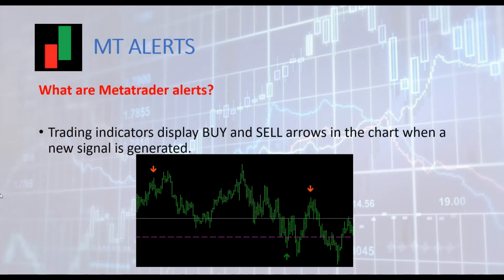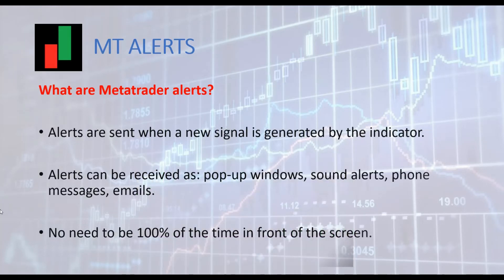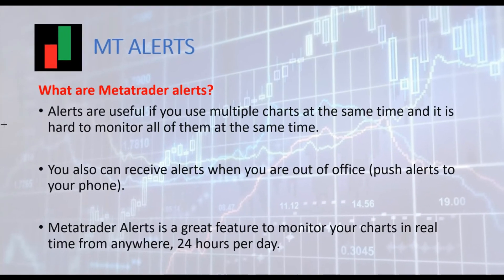Before going into more details, some definitions about the context. We suppose that we use an indicator for MetaTrader that displays arrows indicating buy and sell opportunities — we can call them buy and sell signals. Alerts notify the user that a new signal was generated by the indicator. Alerts can be received as pop-up windows, sounds, phone messages, or emails. With alerts, there is no need to stay in front of the screen 100% of the time. Alerts are useful for traders monitoring multiple instruments and time frames, and are great to keep you updated while out of office — you can receive push alerts to your phone from any location, 24 hours per day.